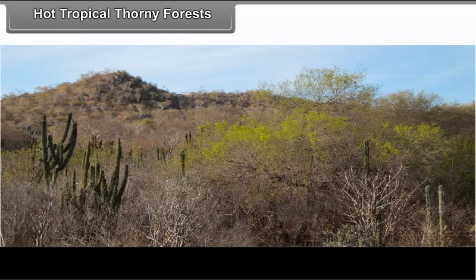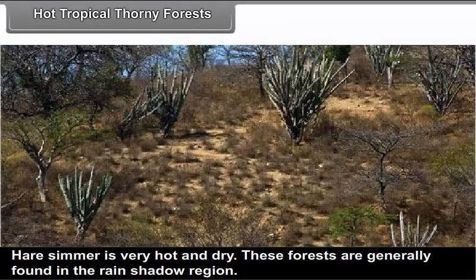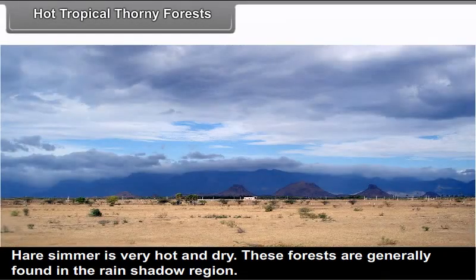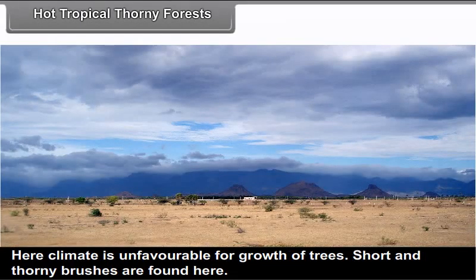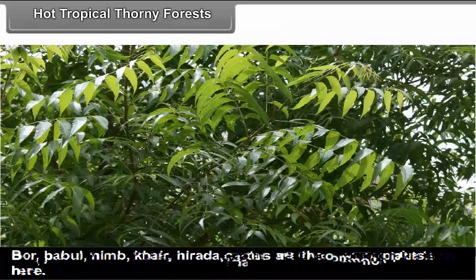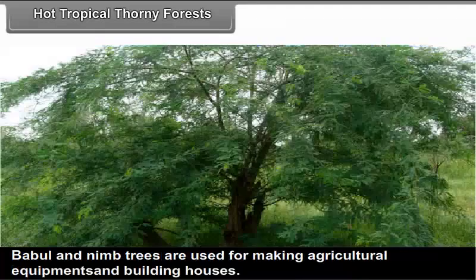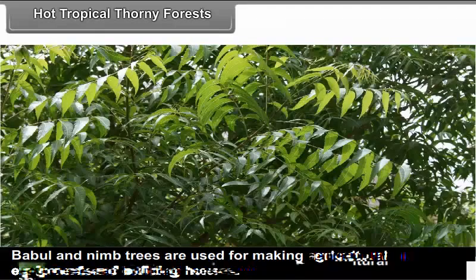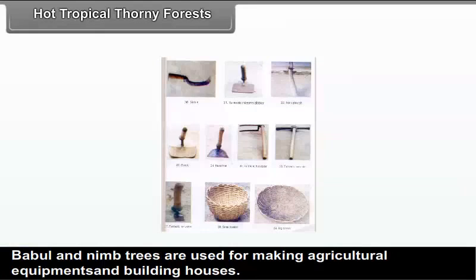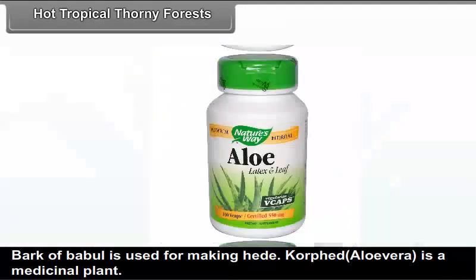Hot Tropical Thorny Forests: These forests are found in regions which receive less than 500 mm rainfall. Here summer is very hot and dry, and these forests are generally found in the rain shadow region. The climate is very unfavorable for the growth of trees. Short and thorny brushes are found here. Bor, Babul, Neem, Khair, Herida and Cactus are the common plants found here. Babul and Neem trees are used for making agricultural equipment and building houses. Bark of Babul is used for making hide. Aloe Vera is a medicinal plant.